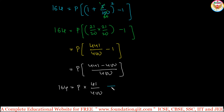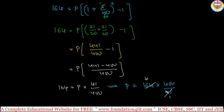Using this, P equals 164 multiplied by 400 by 41 (taking 41 by 400 to the other side as reciprocal). Now, 41 times 4 is 164, so those cancel to give 4. Then 4 into 400 is 1600. So the principal is 1600.